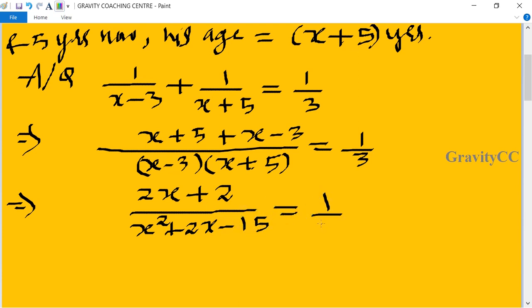Equal to 1 by 3, and after cross multiplication, x squared plus 2x minus 15 equal to 6x plus 6.